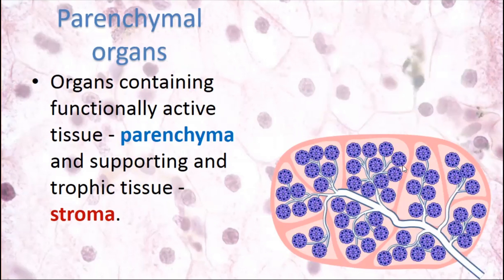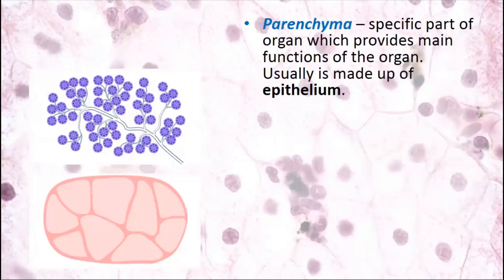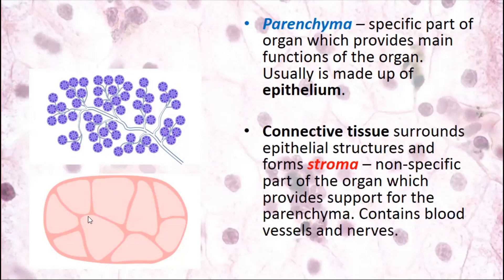Parenchyma is the specific part of the organ which provides its main functions, and usually it is made up of epithelium — that is the rule, though there are some exceptions. Usually parenchyma is glandular epithelium. In the immune system, immune cells form the parenchyma instead. Stroma is made up of connective tissue — connective tissue surrounds the epithelial structures, forms the stroma, provides support, and contains blood vessels and nerves.